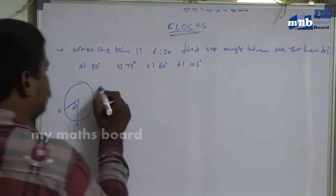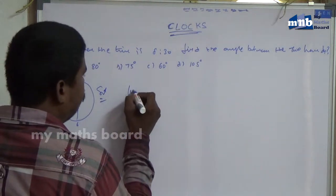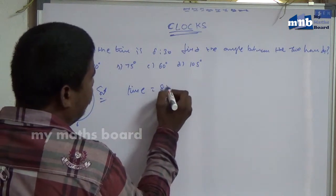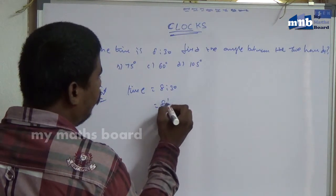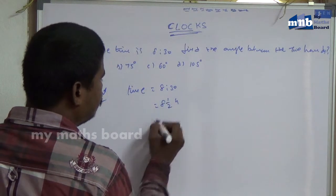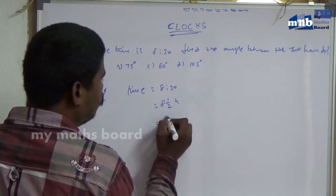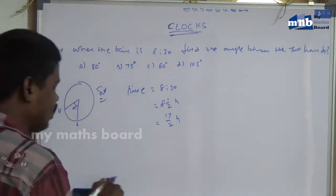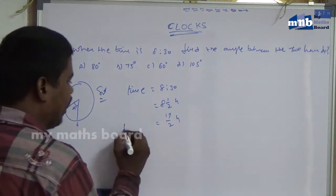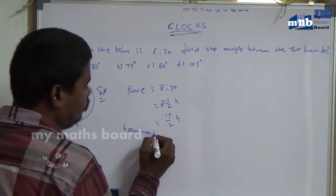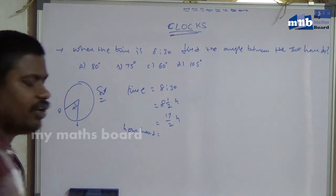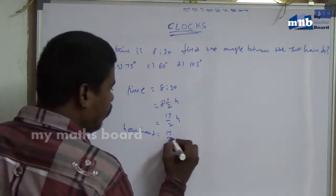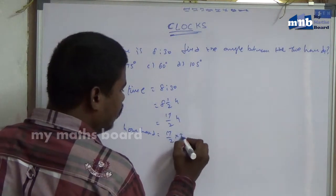The solution: the time is 8:30, which means 8 and a half hours, that is 17 by 2 hours. For the hour hand, it rotates 30 degrees per hour. So, 17 by 2 into 30.